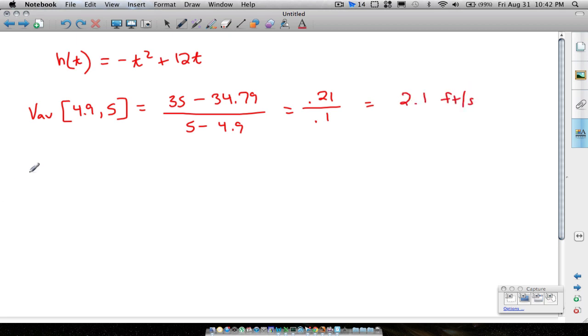All right, let's do another average velocity. What about the average velocity from 4.99 to 5? Well, we have 35 minus, I'm getting, and I'm doing this real quick, but it's 34.9799 over 5 minus 4.99.